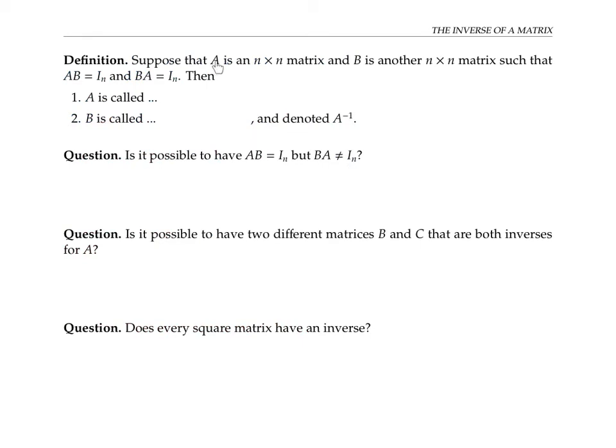Let's start with the definition of an inverse matrix. Suppose that A is an n by n square matrix, and B is another n by n matrix, so that when you multiply A and B together in either order, you get the identity matrix. Then A is called invertible, and B is called the inverse of A. This can be denoted A to the negative one.